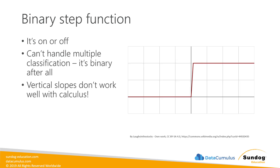Sort of the close cousin to a linear activation function is the binary step function. All this does is say: if nothing is coming into the neuron, output nothing; but if anything at all is coming in, output a fixed positive value — it's either on or off. The problem is it can't handle multiple classification. It's a binary function that can only signal that a neuron represents one thing, so if you want to say something belongs to multiple categories, there's no way to do that.